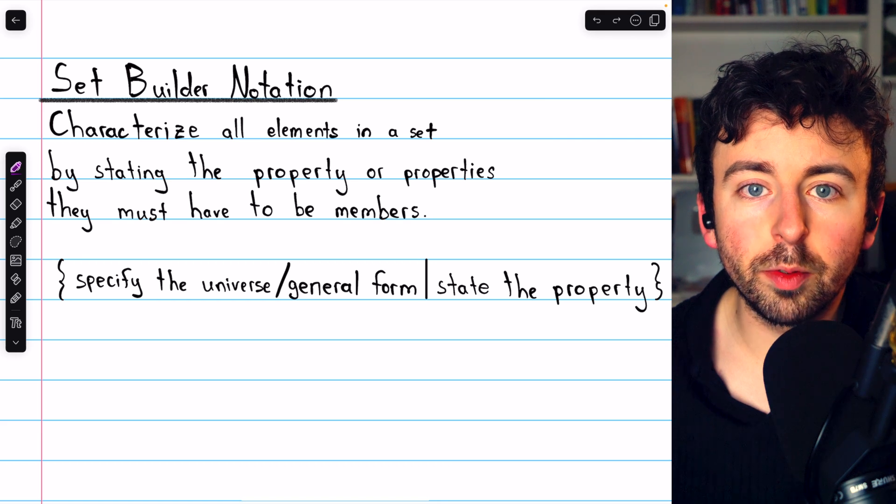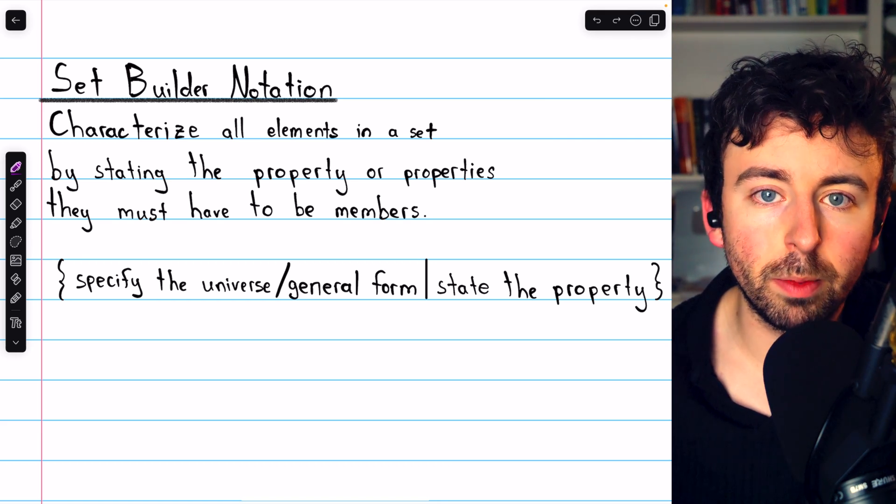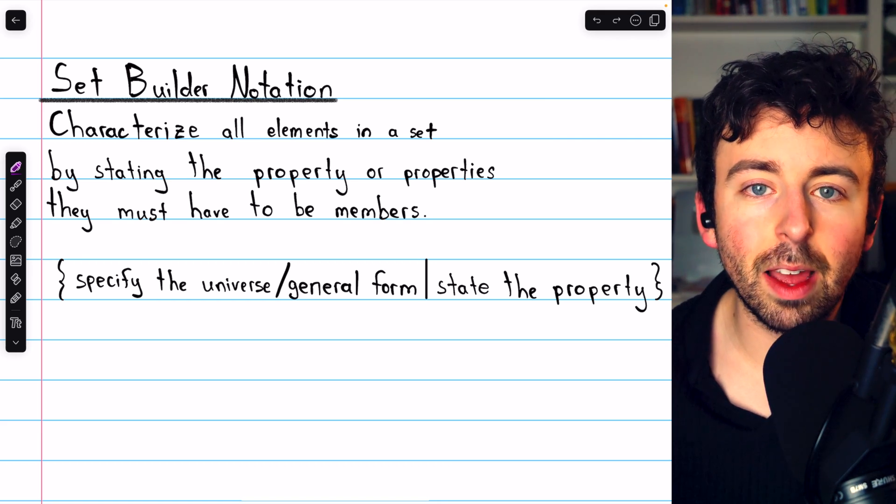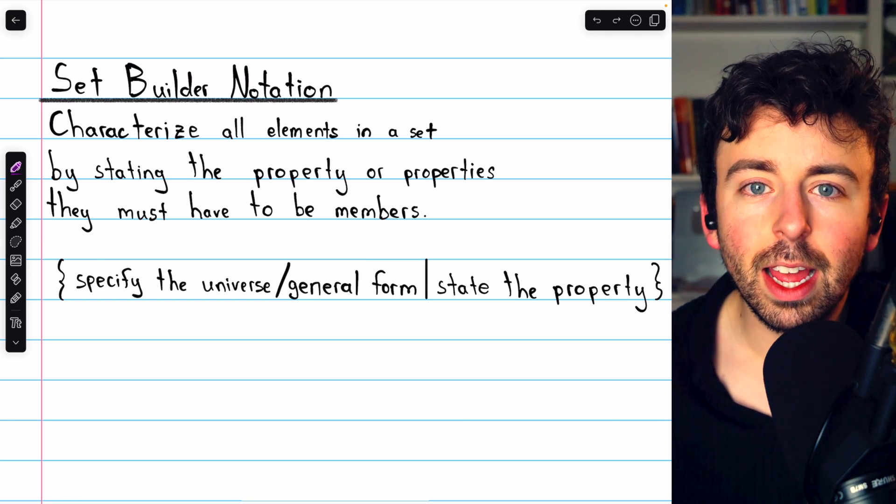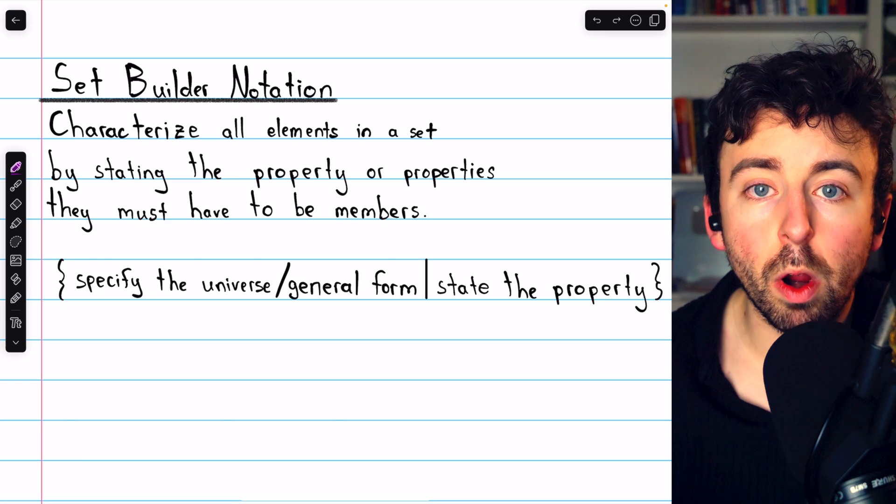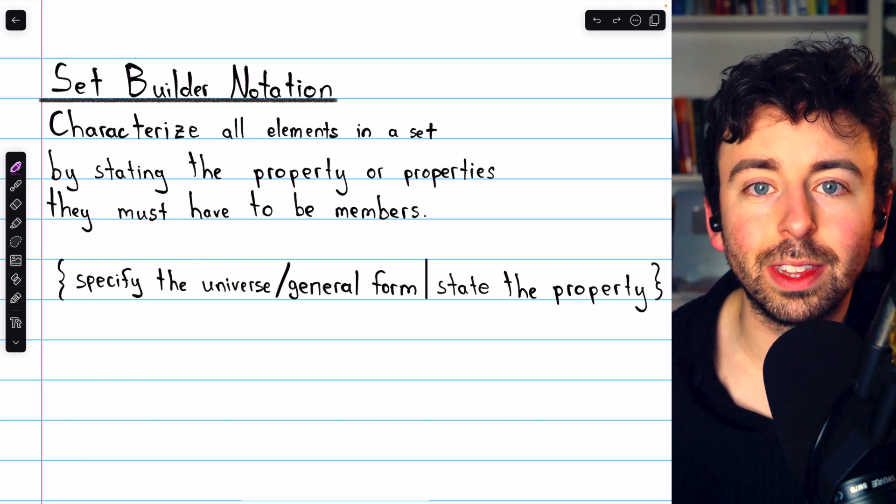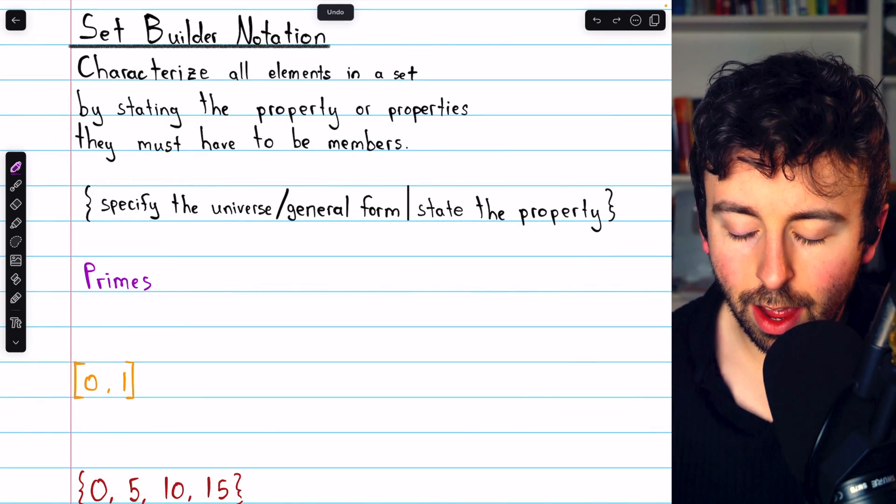So let's do a few examples of taking a description or some known set and turning it into set builder notation. And then we'll go the other way, taking set builder notation and turning it into a set in roster form, where we just list out the elements. Beginning with the set of primes.